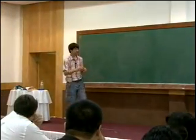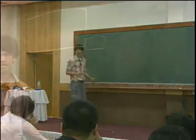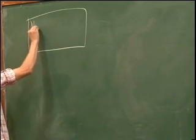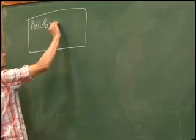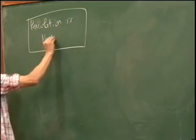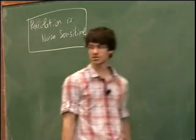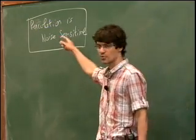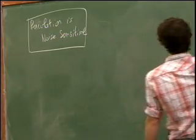The lecture will be divided into two different topics. In the first part, I will prove for the first time in this course that percolation is noise sensitive — more precisely, that crossing events in critical percolation are noise sensitive. To prove this we will use the theorem proved in the last lecture, the Benjamin-Kalai-Schramm theorem, which I should recall here.